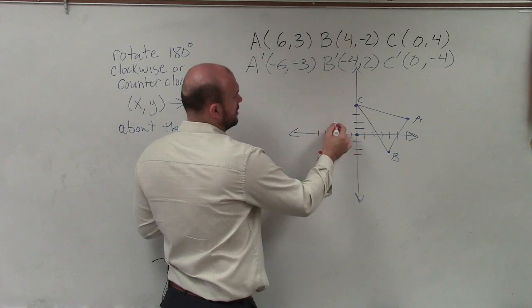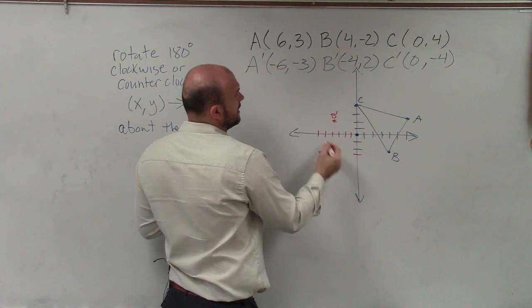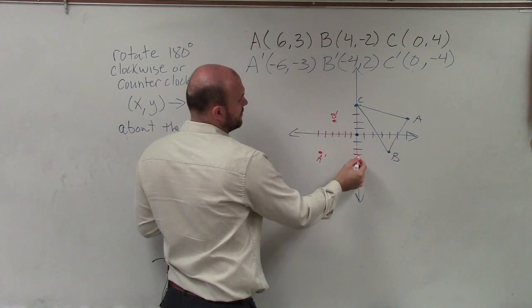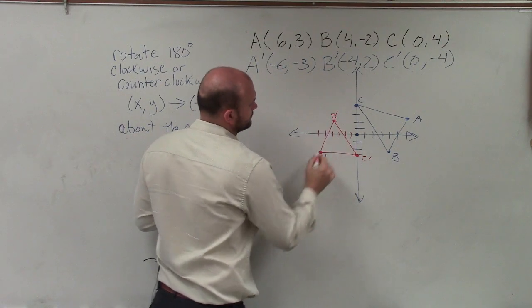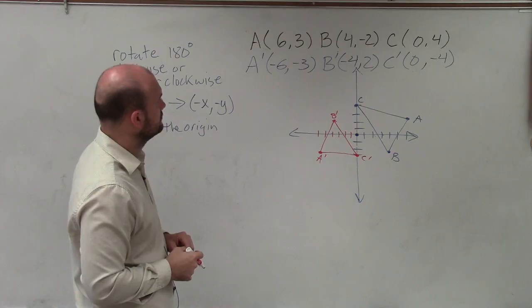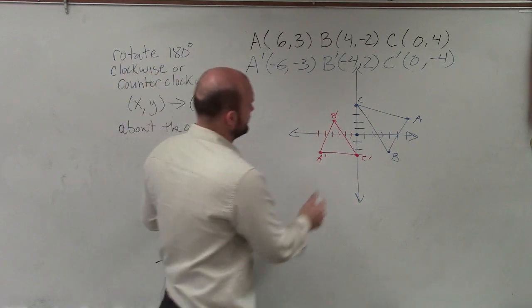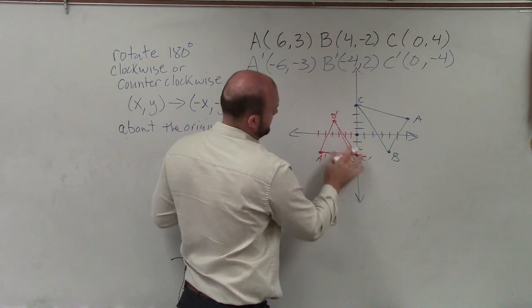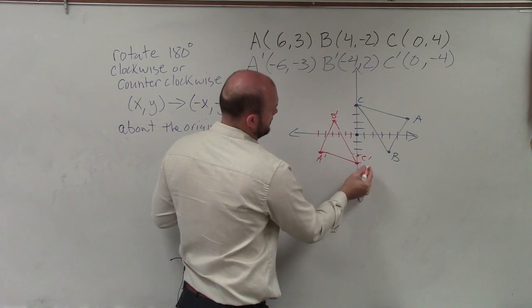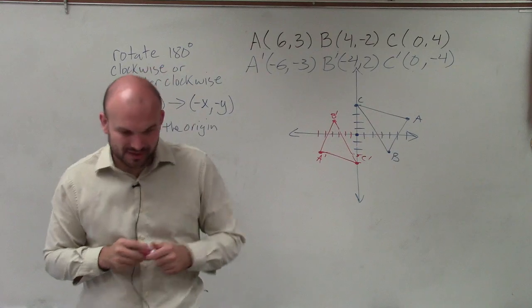B prime is negative 4, 2. 1, 2, 3, 4, up 2. And C prime is 0, negative 4. Oh, that's 0, negative 3.